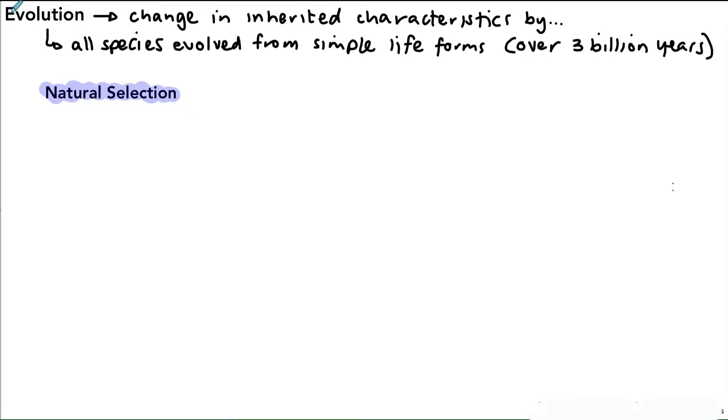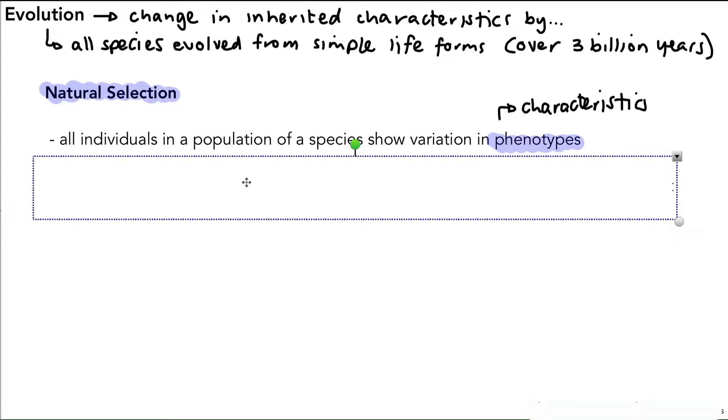This idea of natural selection - you should be able to describe how that mechanism works. We'll break it down into steps. The first step is that all individuals in a population of a species show variation in phenotypes, and you'll remember from previous videos by phenotypes we mean characteristics. All populations show variation in those characteristics.